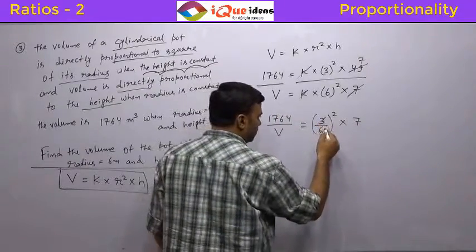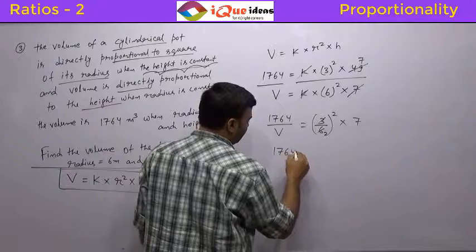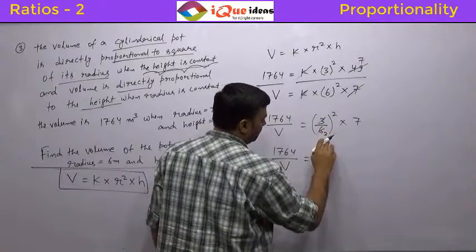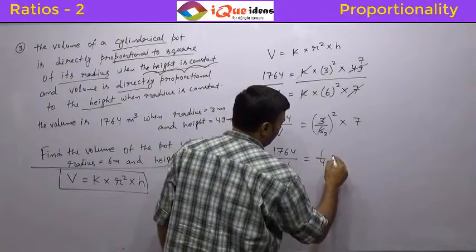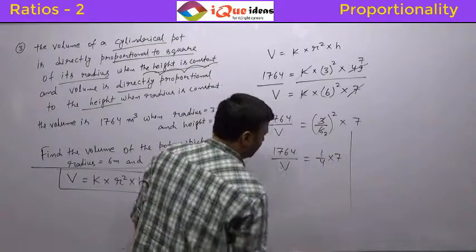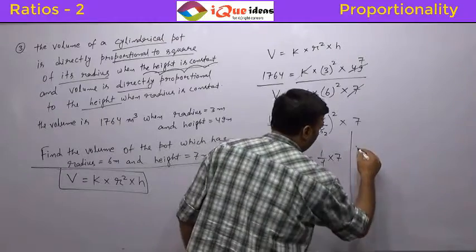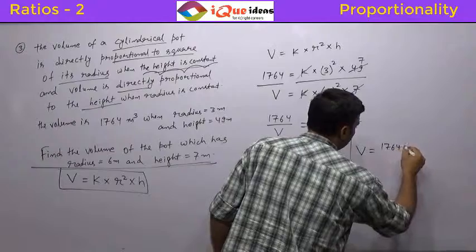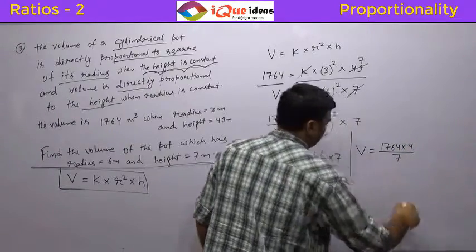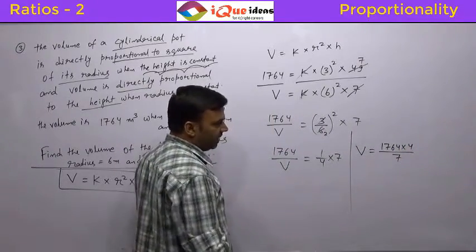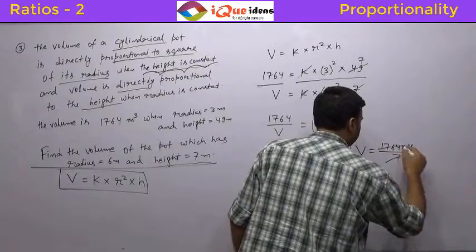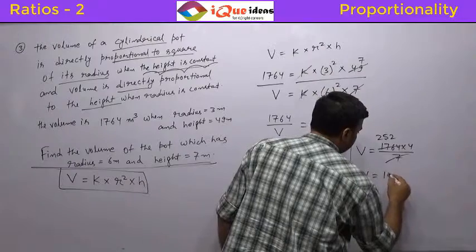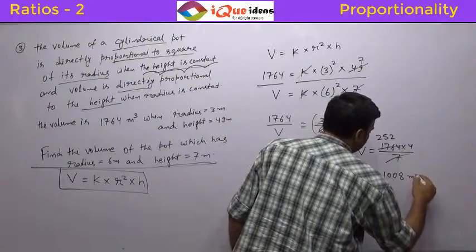So basically we have 1764 upon V is equal to 1 by 2 square. 1 by 2 square will be 1 by 4 into 7. From here very clearly you can see if we cross multiply the volume required will be equal to 1764 into 4 divided by 7. So if we simply divide by 7 it comes out to be 252 and then 252 into 4 will be equal to 1008 meter cube.